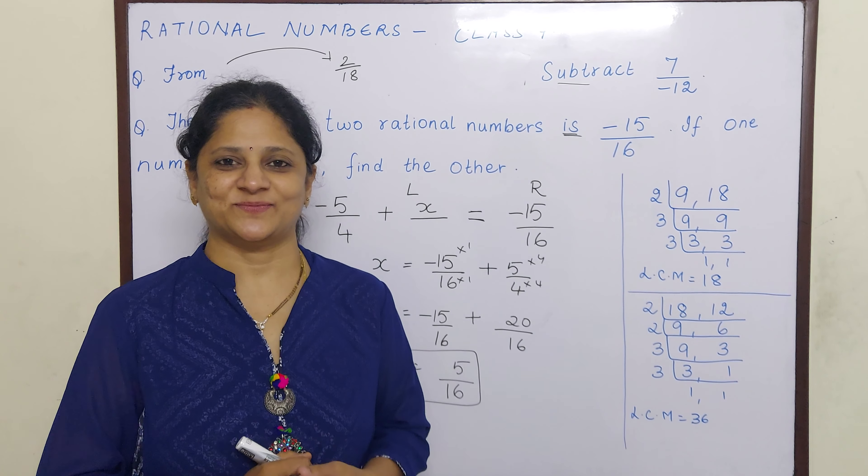Now children, in this addition always remember you can place x anywhere, because 2 plus 3 is also 5 and 3 plus 2 is also 5. Now what we learnt in the previous sum is that there should be no negative sign in the denominator, so I will shift this negative sign on top. I will keep x on the left hand side and minus 5 by 16 on the right hand side. When I take minus 5 by 4 to the other side, it will become plus 5 by 4.